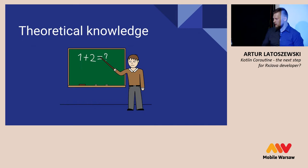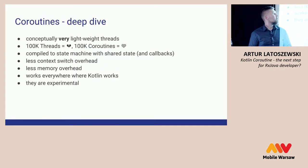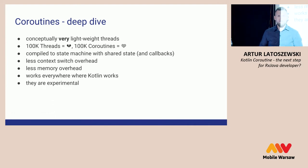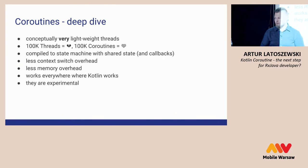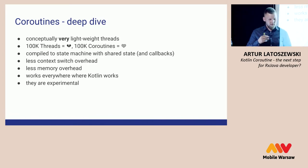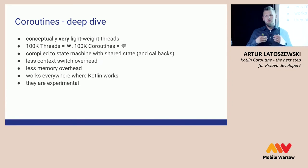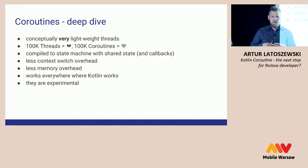Let's start with some theoretical knowledge. Coroutines — what are they, and a deep dive inside. Conceptually, they are very lightweight threads. For example, when you run 100,000 threads you get an out-of-memory exception, but when you run 100,000 coroutines everything will work. It works thanks to compiling: at compile time it creates a state machine with shared states, and underneath it all still works on callbacks, but you don't see it.